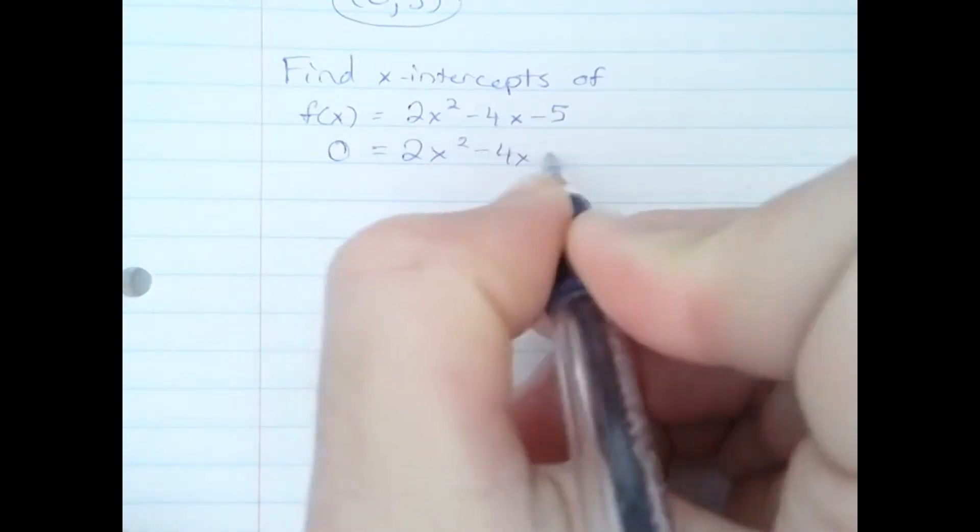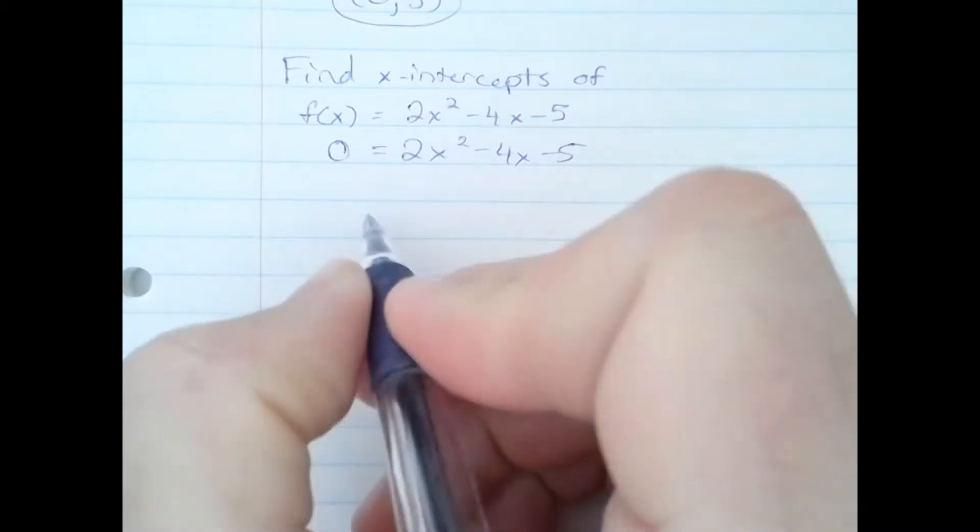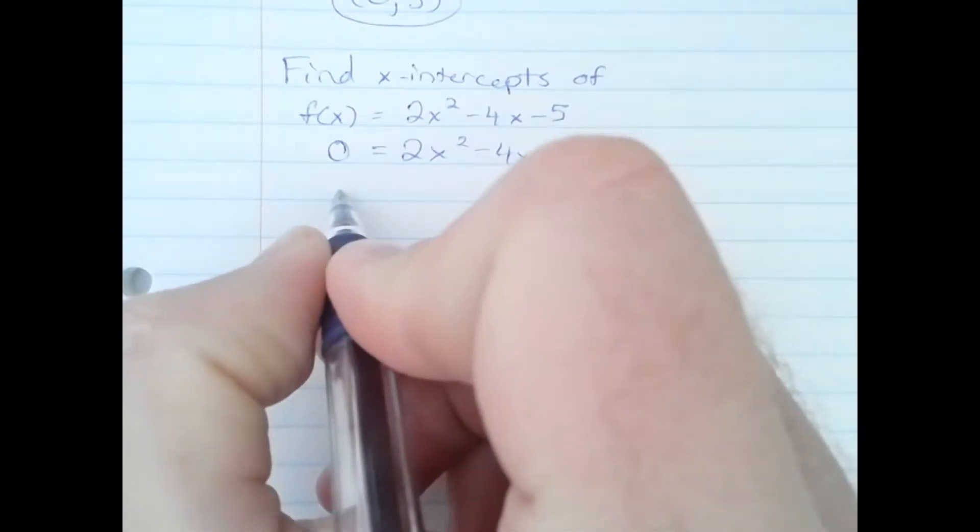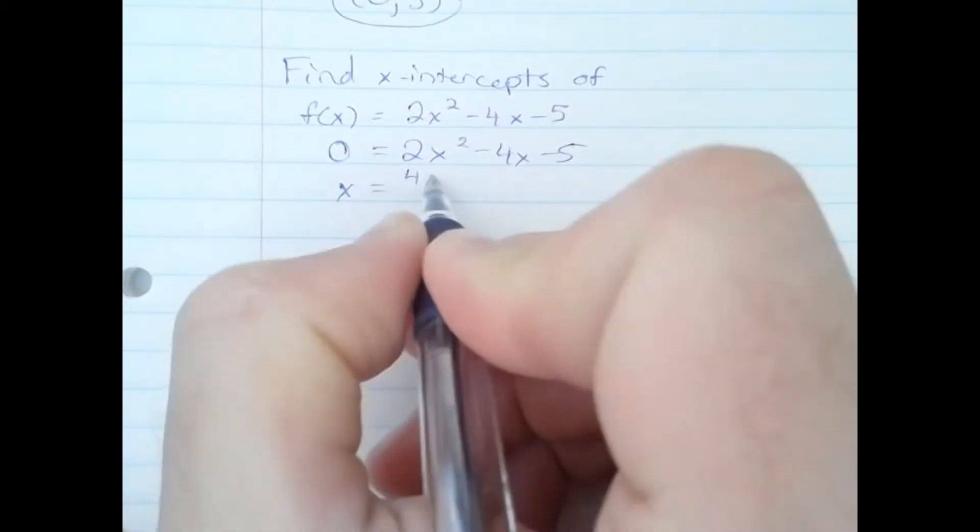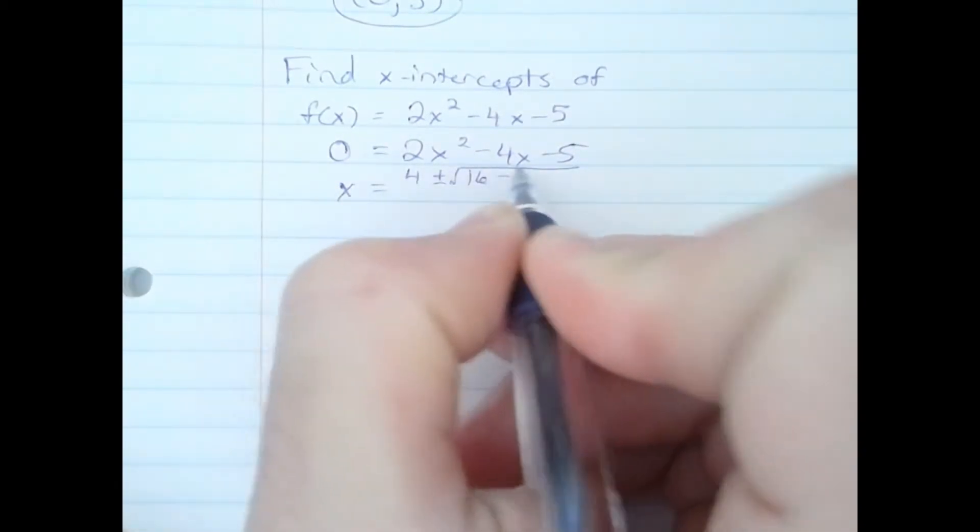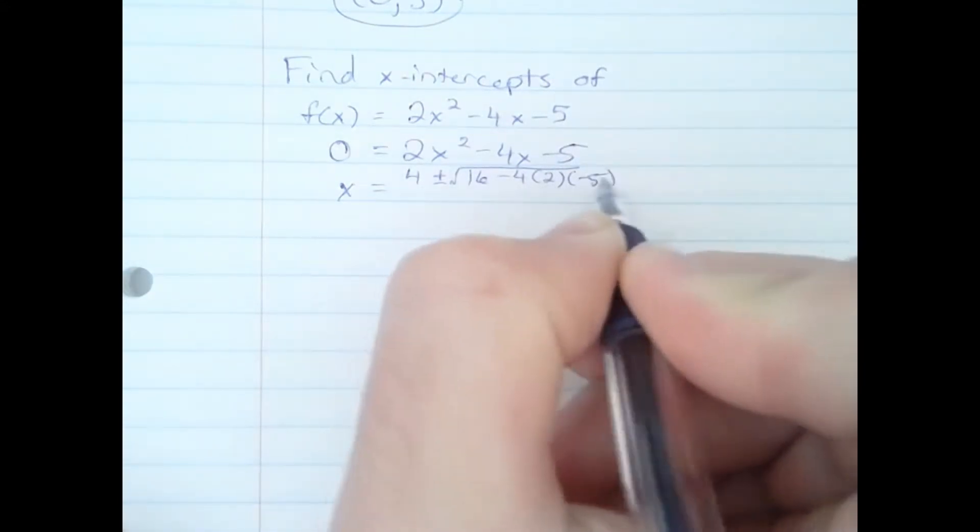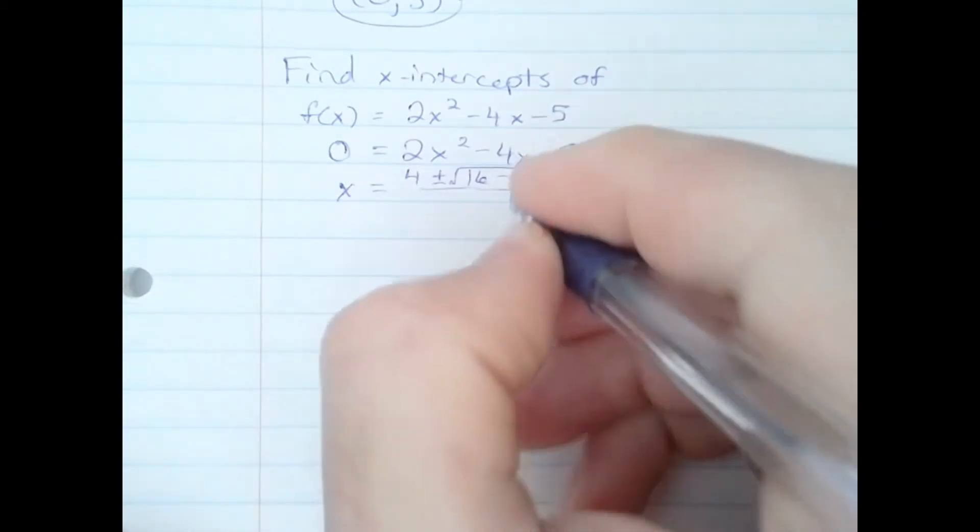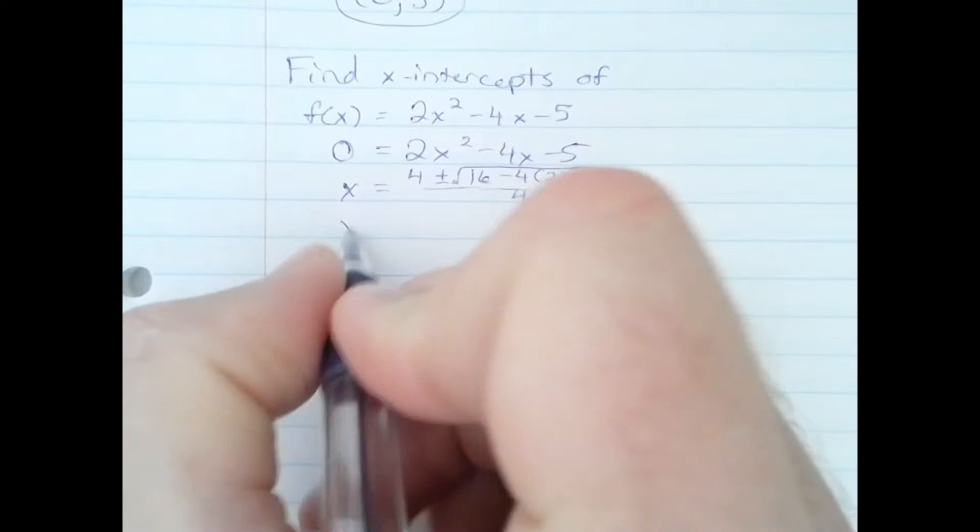So this is what we will have. x equals negative b, which is 4, plus or minus the square root. b squared, which is 16, minus 4 times a times c, which is negative 5. 2 times the a is 4, and then we simplify from there.